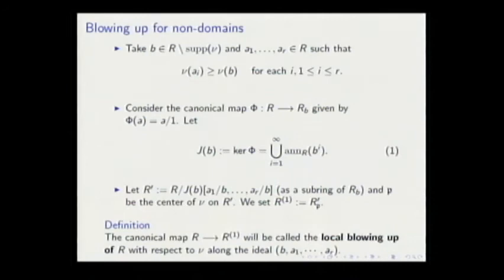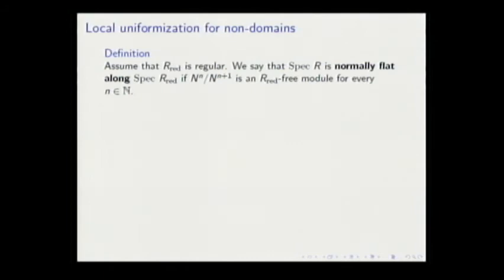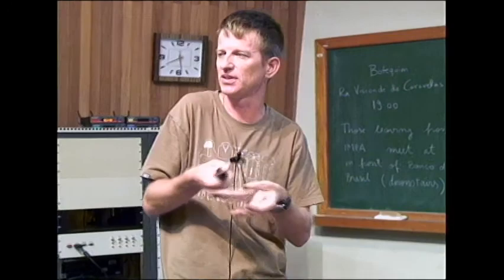This is what we'll call local blowing up along this ideal. This is the type of surgeries we'll make in this ring to try to obtain local uniformization in this more general context. But we cannot expect that the ring itself after blowing up will become regular. We want more: we want that this extension will be normally flat.